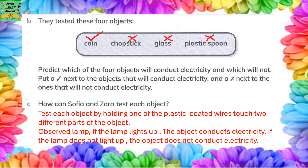Sophia and Zara tested these four objects: coin, chopstick, glass, and plastic spoon. Predict which of the four objects will conduct electricity and which will not — put a tick next to objects that will conduct electricity and a cross next to those that will not. The coin is made of metal so it will conduct electricity, but the other objects are insulators so they won't conduct electricity.